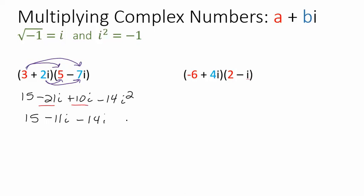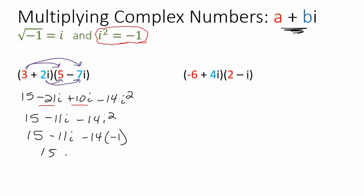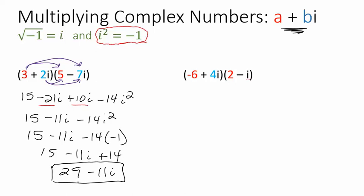This number written with an i squared is not a complex number — it doesn't look like a plus bi. I don't want an i squared in there. So this is where the important fact comes in: whenever we have an i squared, we replace it with negative 1. So negative 14i squared becomes negative 14 times negative 1, which is positive 14. Combining 14 and 15 gives us a real number. A complex number times a complex number gives another complex number — the only way to make that happen is to make this substitution with the i squared.